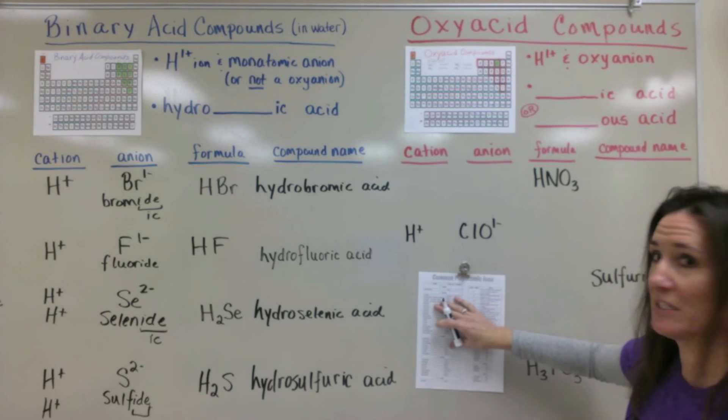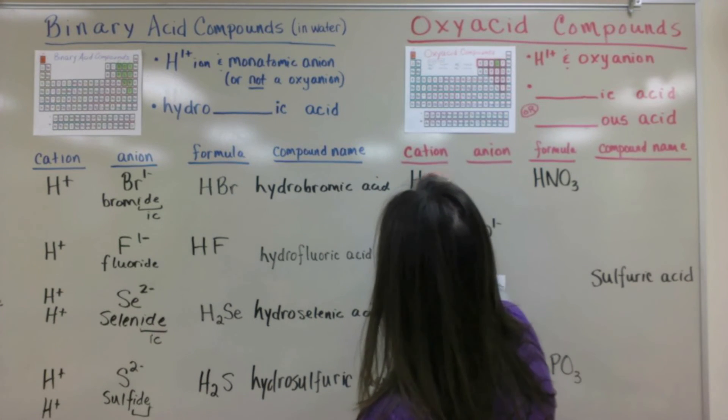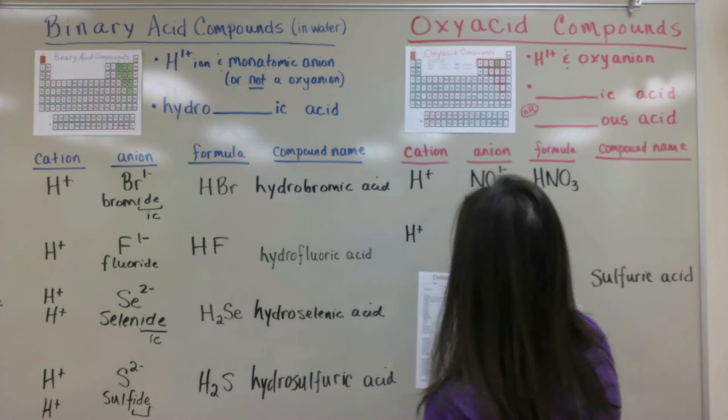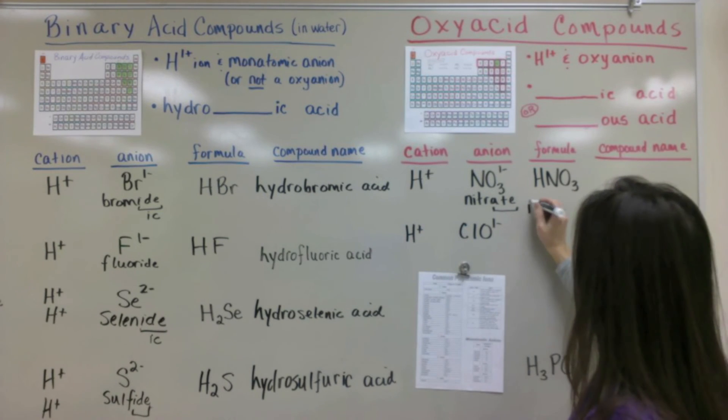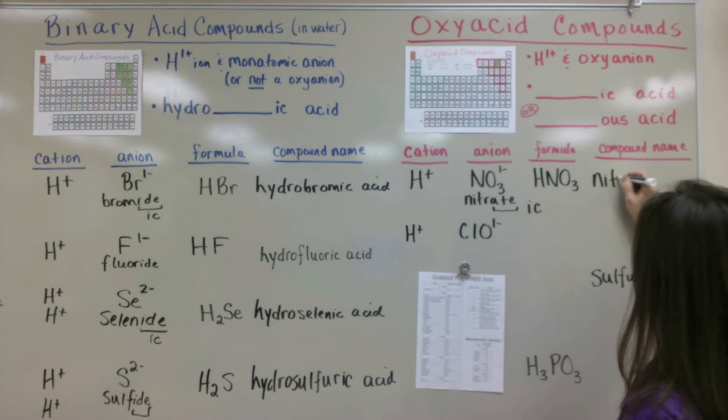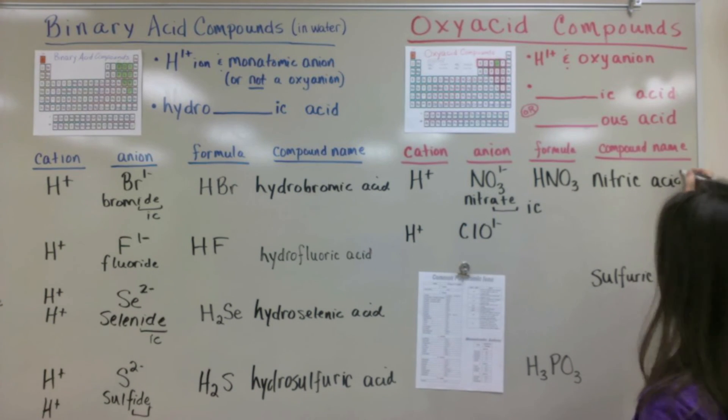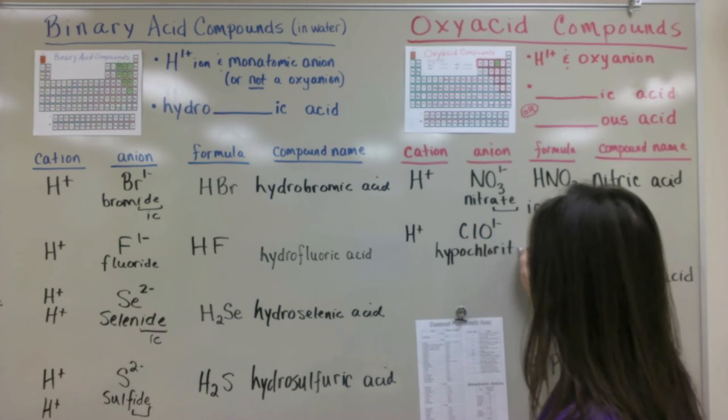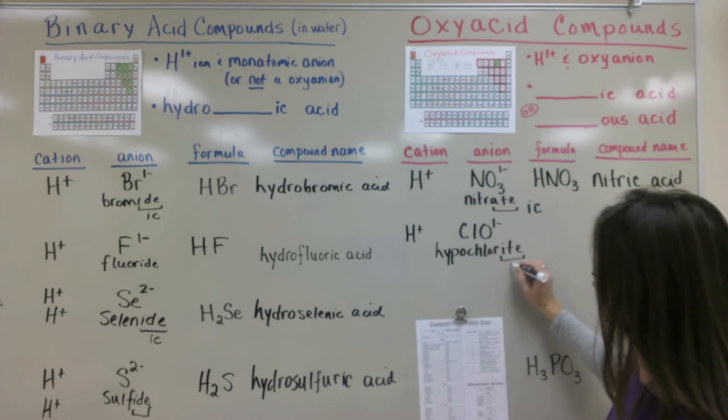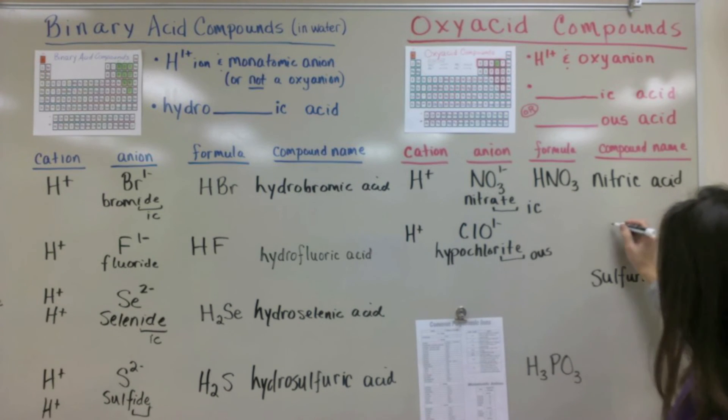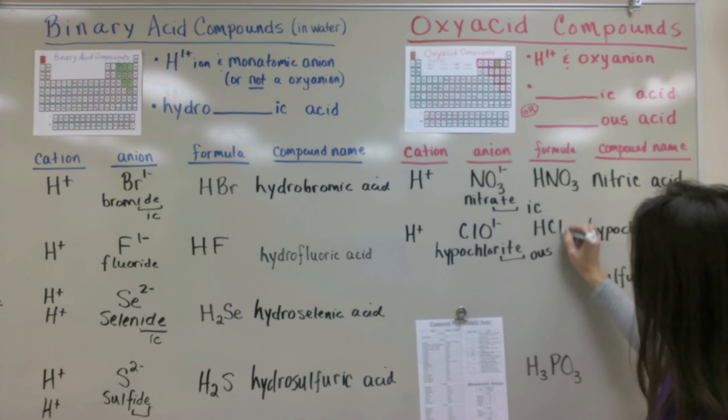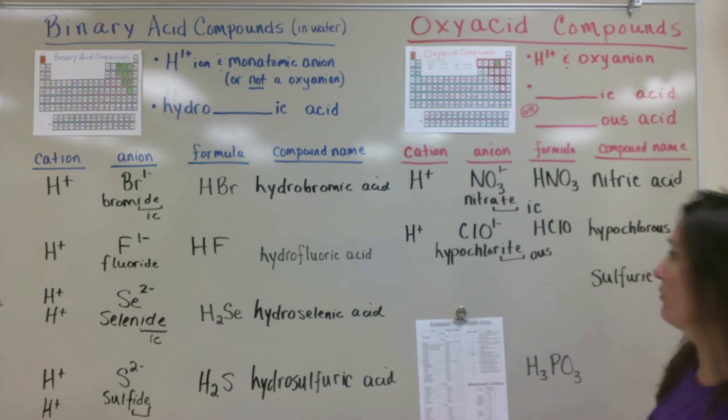They contain oxygen containing polyatomic ions called oxyanions. Again hydrogen is always the cation. And in this case NO3 or nitrate is the anion. And ate turns into ic when you name them. And you don't add hydro for these. So it's just nitric and then acid. The next one we know that we have what's called the hypochlorite ion. And again the rules state ite turns into ous. So the name of it will be hypochlorous and then acid.